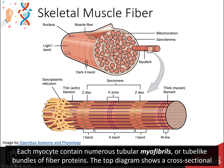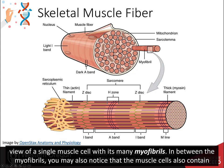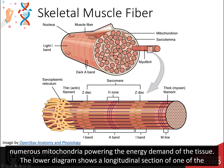The top diagram shows a cross-sectional view of a single muscle cell with its many myofibrils. In between the myofibrils, you may also notice that the muscle cell contains numerous mitochondria powering the energy demand of the tissue.